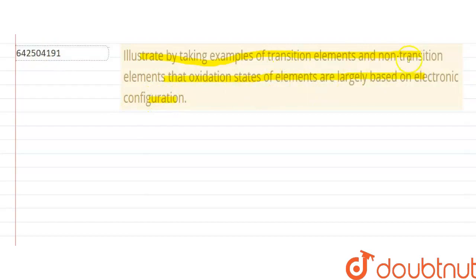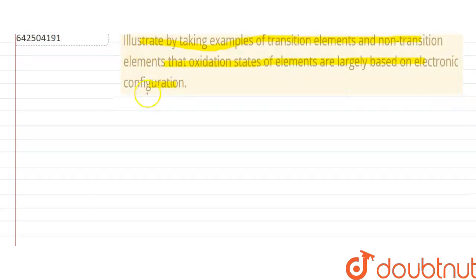Okay, so first of all, what are transition and non-transition elements? So transition elements are basically d-block elements, with a little exception. Basically we consider them to be d-block elements itself, and non-transition elements will be other than those. So let us take examples.